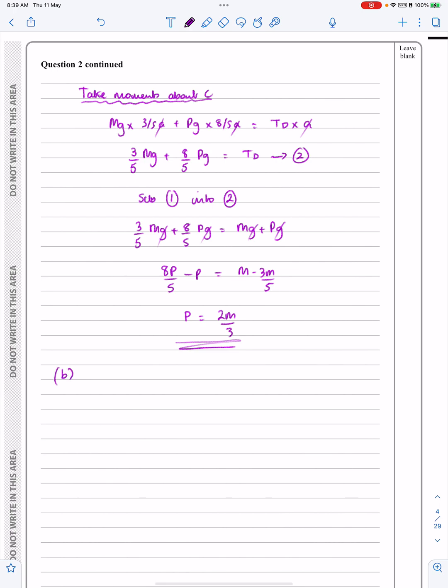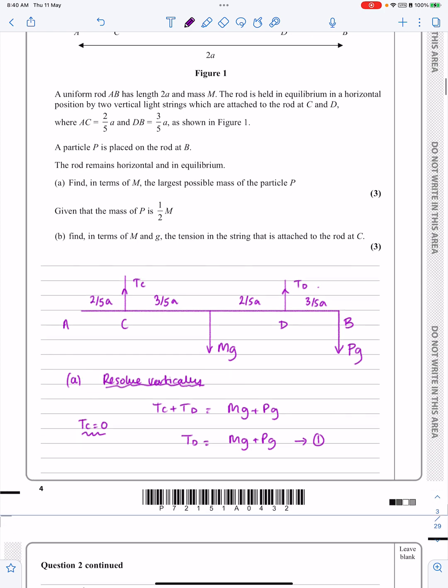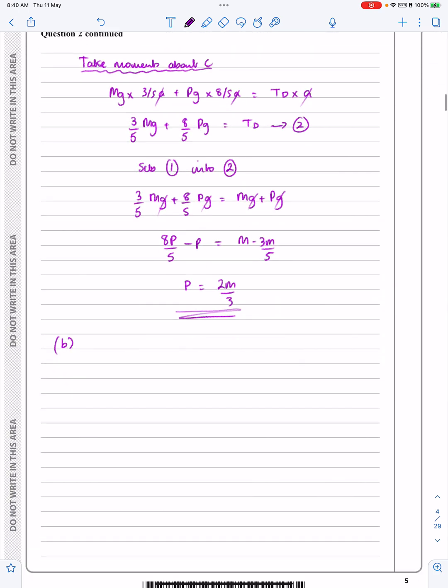Let's look at part B. What does part B say? Part B says, given now that the mass of P is equal to a half M, find in terms of M and G, the tension in the string at Tc. We're going to have to find for this next one.